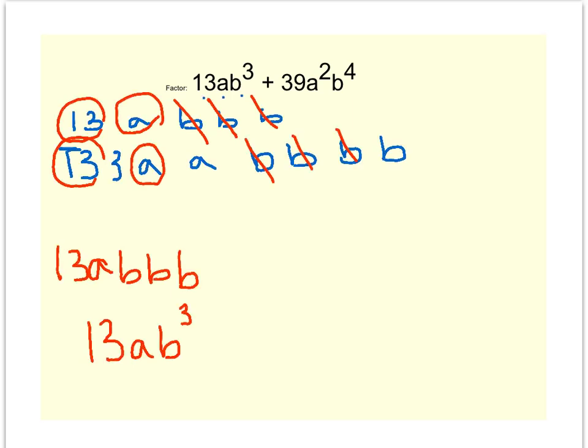But now, the problem isn't asking me for the GCF. It's asking me to factor. So I just did the first step and took out a GCF. Now, to complete my factoring, I need my parentheses. And remember, I started with two terms. So in the parentheses, I have to represent two terms. So let's think about this. 13 times what gets me back to the 13? A 1. I've got an A. How many A's do I need here to get back to just an A? None of them. I've got B to the third here. So how many B's do I need here to get back to B to the third? None. So I really just have a 1 here.